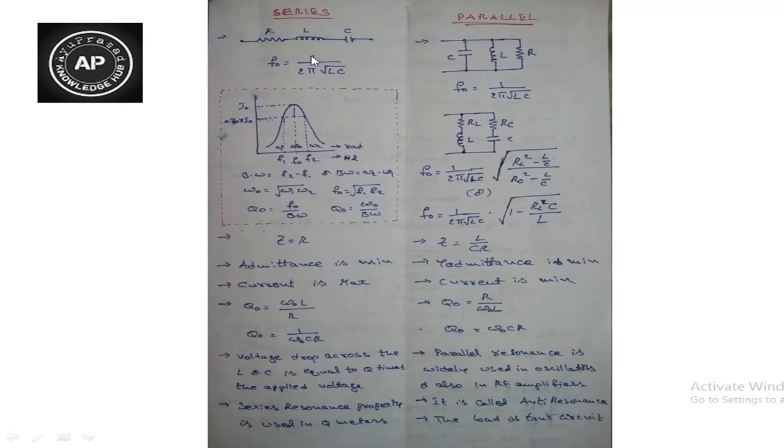The resonance frequency is F₀ equals 1 over 2π times the square root of LC. For series resonance, the resonance frequency formula is the same. For parallel resonance, F₀ equals 1 over 2π root LC. Both series and parallel resonance use the same formula.